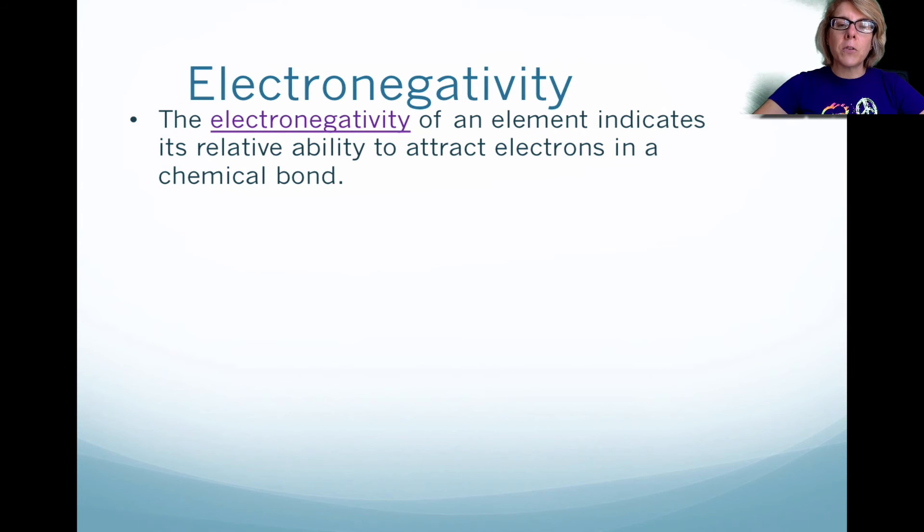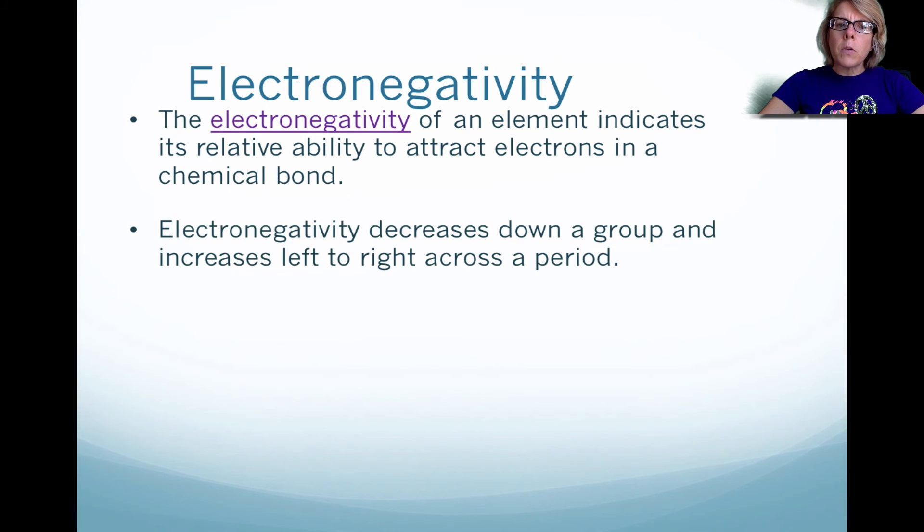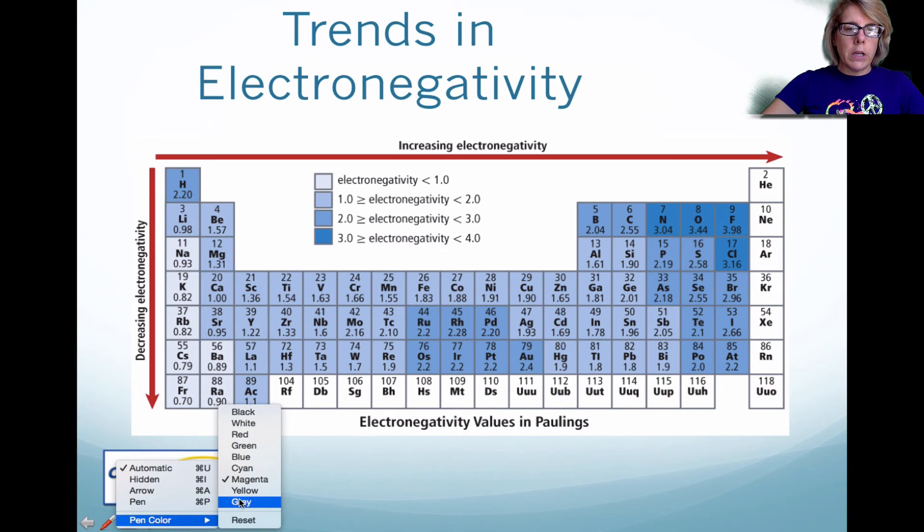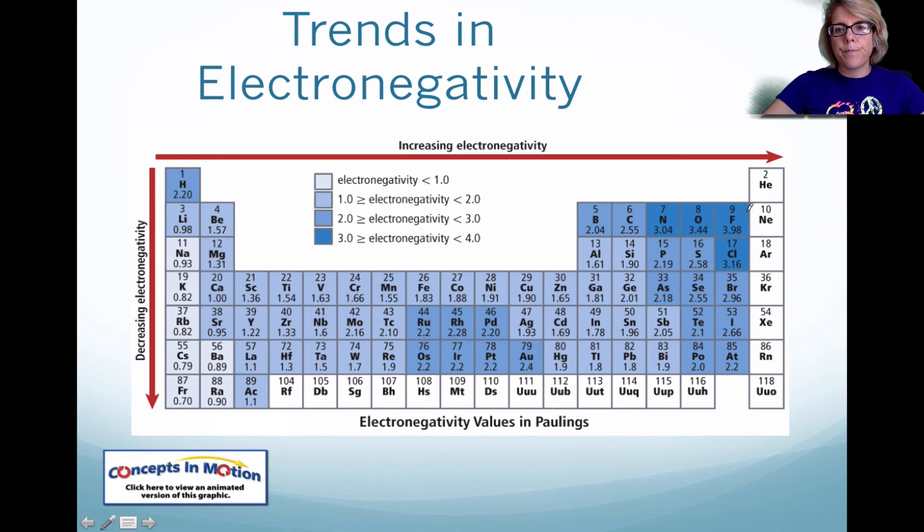The last trend is electronegativity. Electronegativity is the ability of an element to attract electrons for a chemical bond. Please note that when we're looking at electronegativity, we're actually decreasing the amount of energy when you go down a group. And electronegativity actually increases when you go left to right across a period.